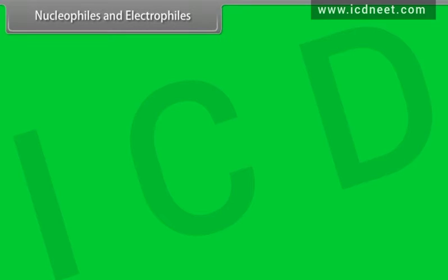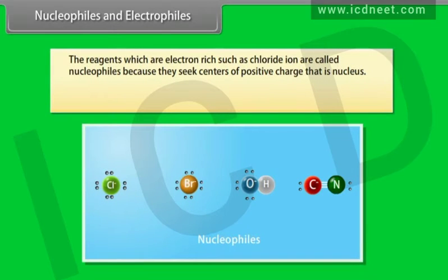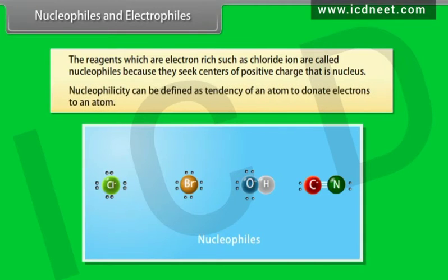Nucleophiles and electrophiles: the reagents which are electron rich, such as the chloride ion, are called nucleophiles because they seek centers of positive charge — that is, the nucleus. Nucleophilicity can be defined as the tendency of an atom to donate electrons to an atom.